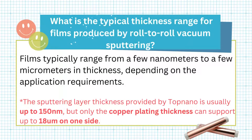What is the typical thickness range for films produced by roll-to-roll vacuum sputtering? Films typically range from a few nanometers to a few micrometers in thickness, depending on the application requirements. The sputtering layer thickness provided by Top Nano is usually up to 150 nanometers, but only the copper plating thickness can support up to 18 micrometers on one side.